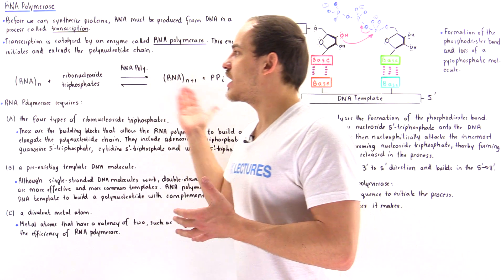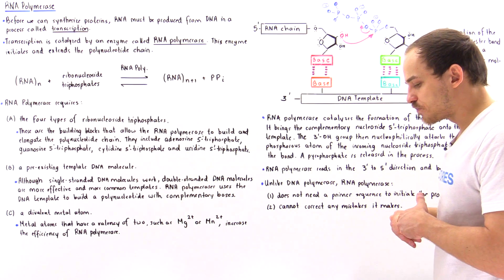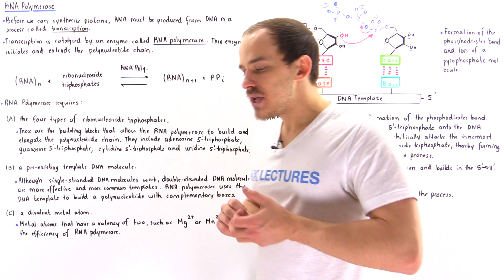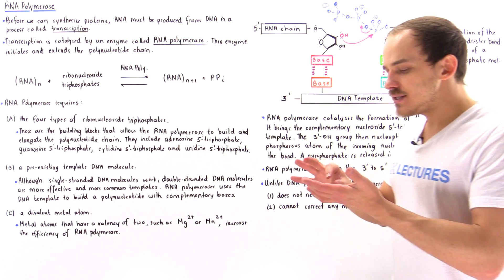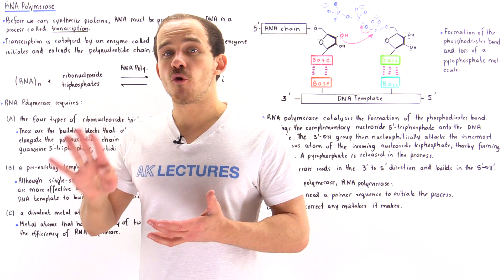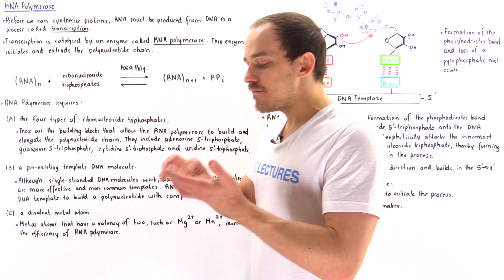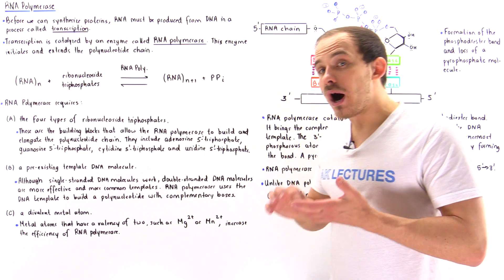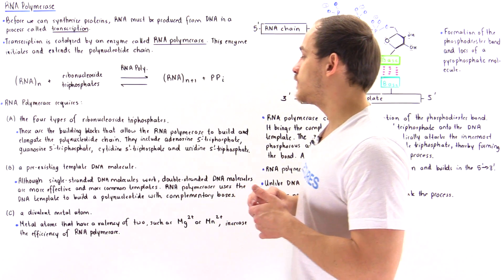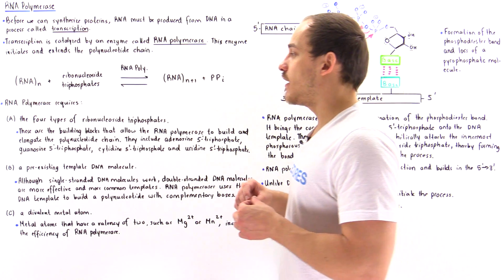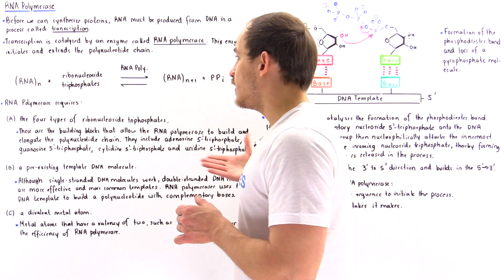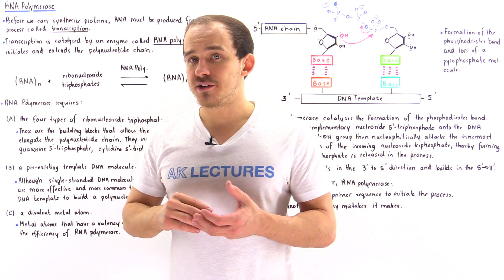This is the general equation that describes RNA polymerase. To actually work, RNA polymerase needs three different things. First, it needs the building blocks — the ribonucleoside triphosphates — and there are four different types: adenosine 5'-triphosphate, guanosine 5'-triphosphate, cytidine 5'-triphosphate, and uridine 5'-triphosphate. These building blocks are needed to synthesize and elongate that polynucleotide chain.